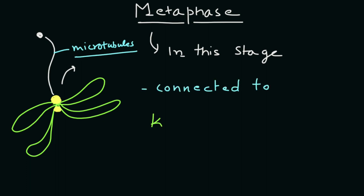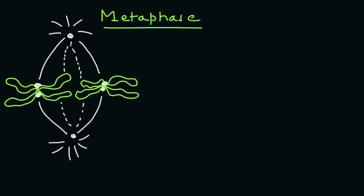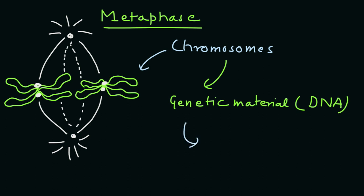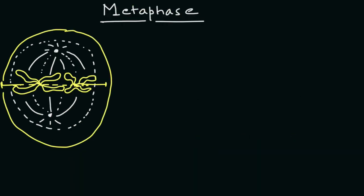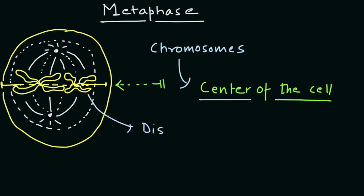During metaphase, chromosomes in eukaryotic cells, which contain genetic material, become tightly condensed and coiled up. They align at the center of the cell before being distributed evenly into the two new cells created during cell division.